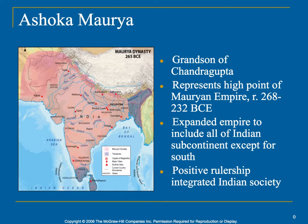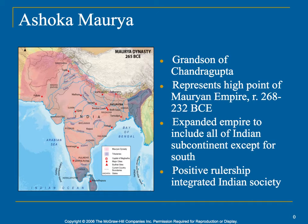Then you have Ashoka, who is the grandson of Chandragupta. He pretty much brings this empire to its highest point and takes over all of modern-day India — except for a small portion — so almost all of India is under his control. He has a positive rulership integrating all of Indian society. His grandfather started it, but Ashoka is the one who solidifies this empire and dynasty under one rule and takes it to its greatest height.